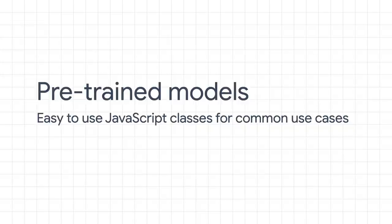There are three main ways we can use TensorFlow.js based on your familiarity with machine learning, JavaScript, or both. The first way is to use our pre-trained models. These are easy-to-use JavaScript classes that can be used for many common use cases. There are many situations where you don't need to train a brand new model from scratch, and instead you can leverage existing work that exists.